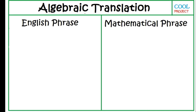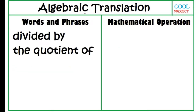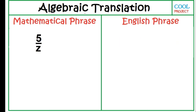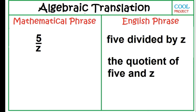Translate the following English phrases to mathematical phrases. A number Z divided by 4. The quotient of a number and 4. The phrases 'divided by' and 'the quotient of' use a single mathematical operation, which is division. Translate this mathematical phrase to English phrase: 5 divided by Z. The quotient of 5 and Z.